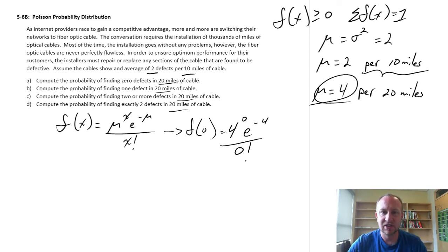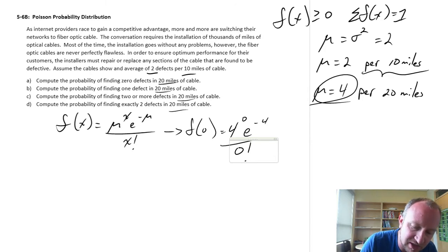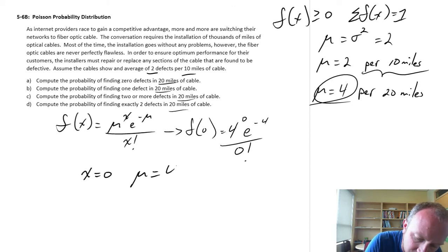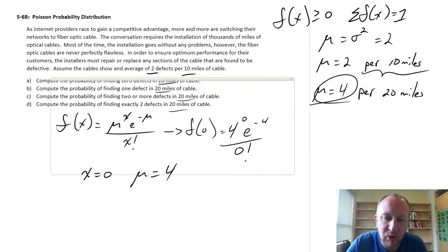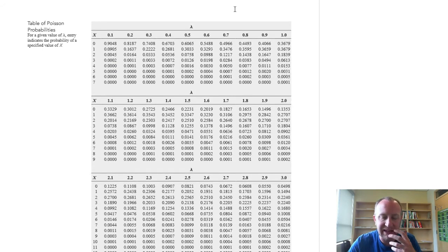Instead of crunching through all of the numbers on the calculator, it's good to get some practice using the distribution tables. So here, all the information that we need is that x equals 0 and mu equals 4. Because with that information, here I can open up my Poisson distribution table.